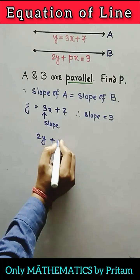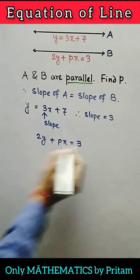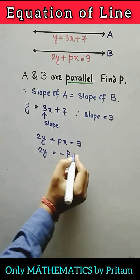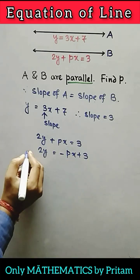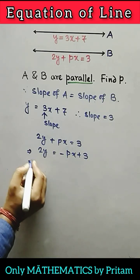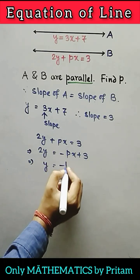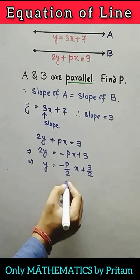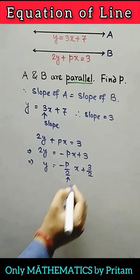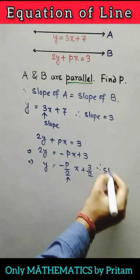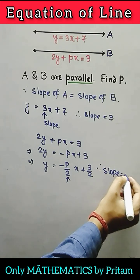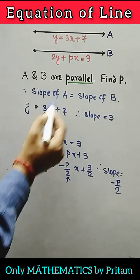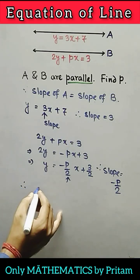From straight line b: 2y plus px equals 3, we can write 2y equals minus px plus 3, so y equals minus p over 2 times x plus 3 over 2. The coefficient of x is the slope, therefore the slope of b will be minus p over 2. Since slope of a equals slope of b,